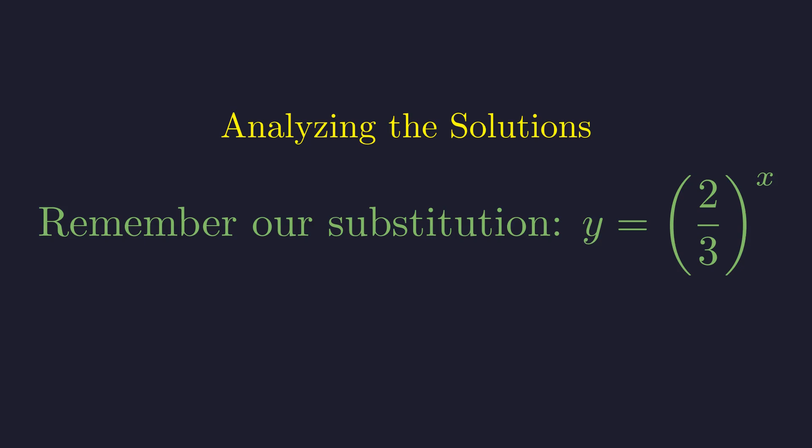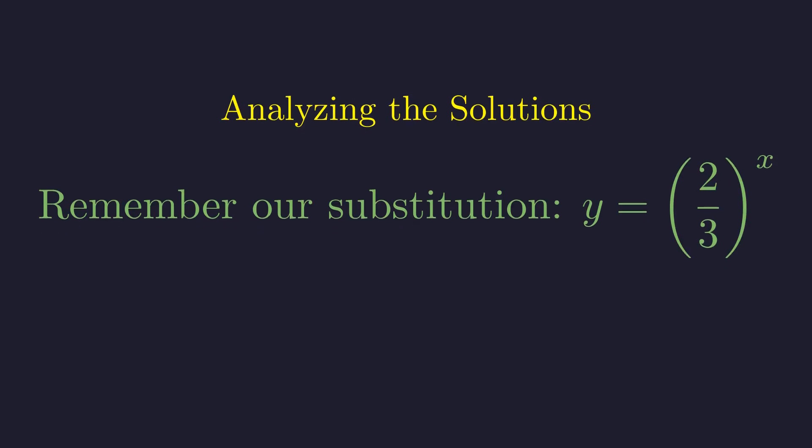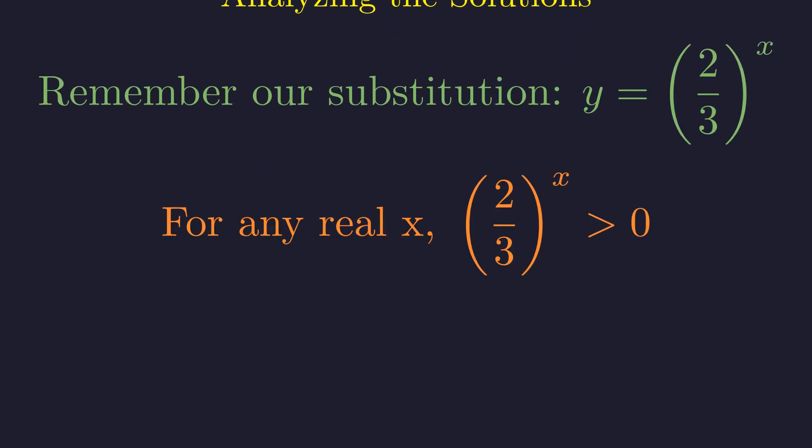An important property to note: since the base two-thirds is positive but less than one, y must always be positive regardless of the value of x. This is a fundamental property of exponential functions. When the base is positive, the result is always positive, regardless of the exponent. This gives us a crucial constraint on our solution.